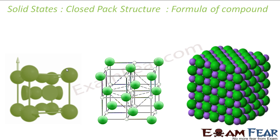We know that the particles are closely packed in two structures only. We have CCP (close-packed structure) and HCP (hexagonal close-packed structure). And there are two types of voids.